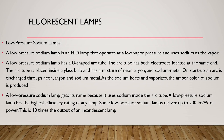Low pressure sodium lamps: a low pressure sodium lamp is an HID lamp that operates at a low vapor pressure and uses sodium as vapor. It has U-shaped arc tubes with both electrodes located at the same end. The arc tube is placed inside a glass bulb and contains a mixture of neon, argon, and sodium metals. On startup, an arc is discharged through neon and argon and sodium metal. As the sodium heats and vaporizes, the amber color of sodium is produced. A low pressure sodium lamp has the highest efficiency of any lamp — some deliver up to 200 lumens per watt, which is 10 times the output of an incandescent lamp.